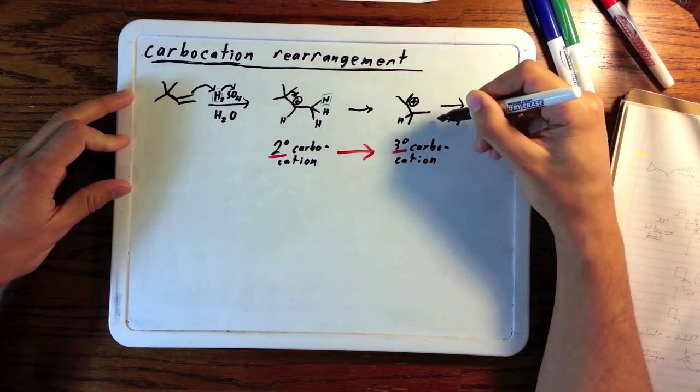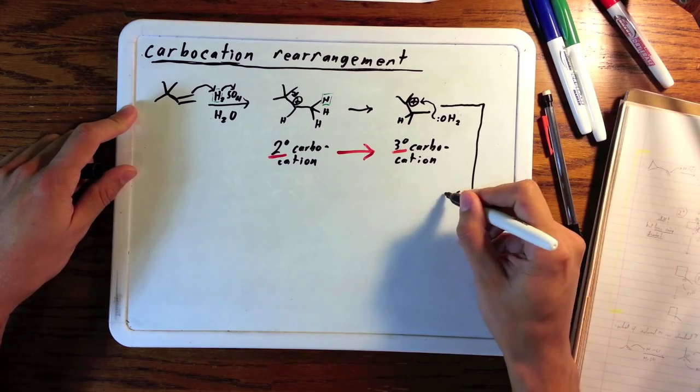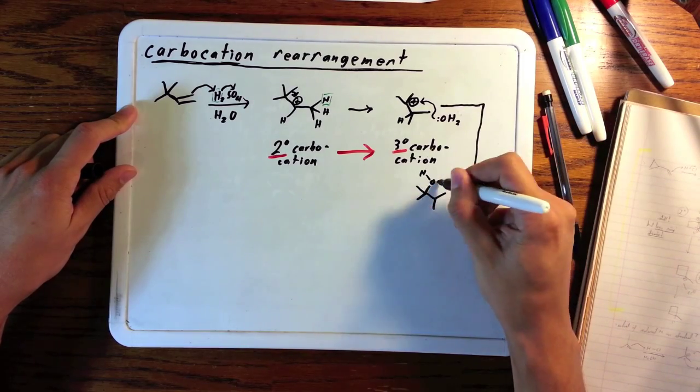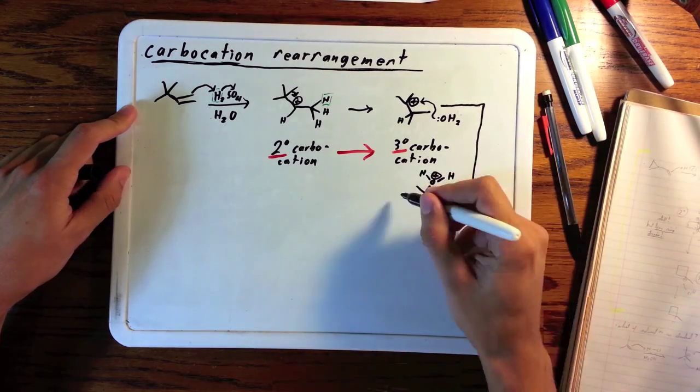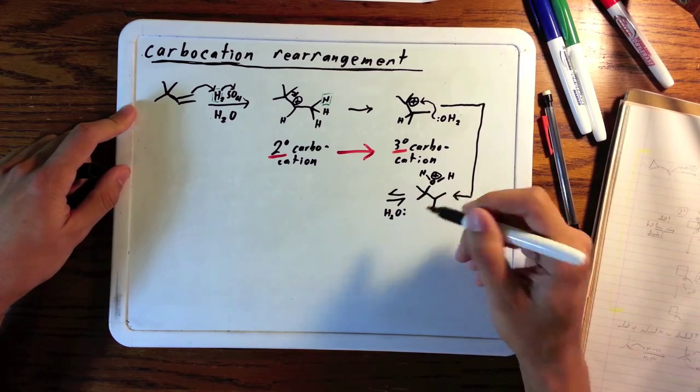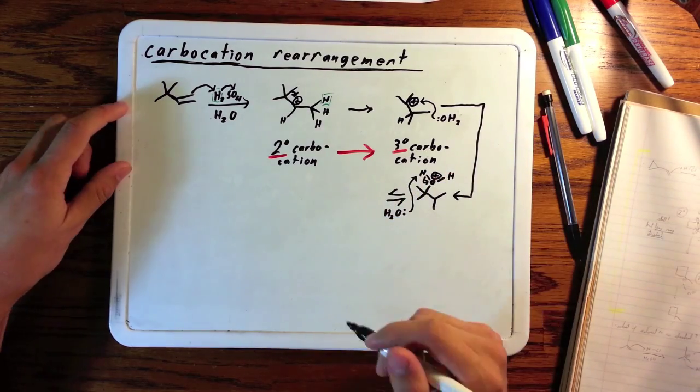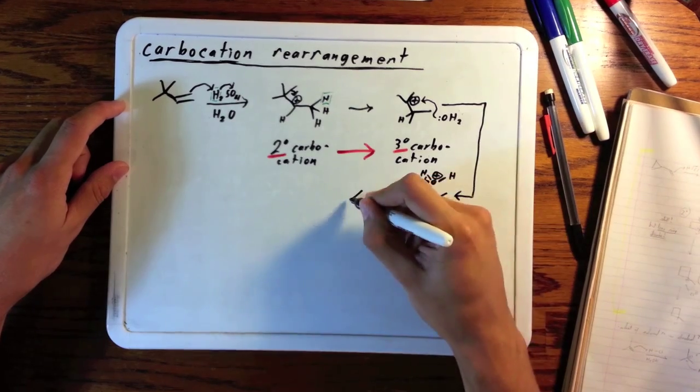Lastly, water attacks the carbocation as a nucleophile and after you lose a proton you get the product. It should be noted that some of this process is reversible. For example, in the product the hydroxyl group can be attacked by a proton from the acid.